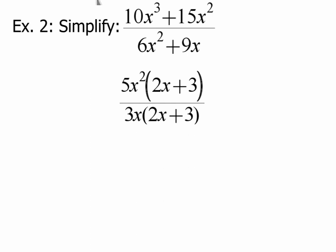So now we need to work our way through this. Okay, so we're going to cancel what we can. I've got 2x plus 3 on the top, 2x plus 3 on the bottom. Those cancel each other out.